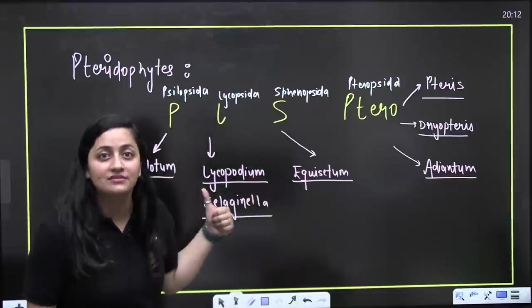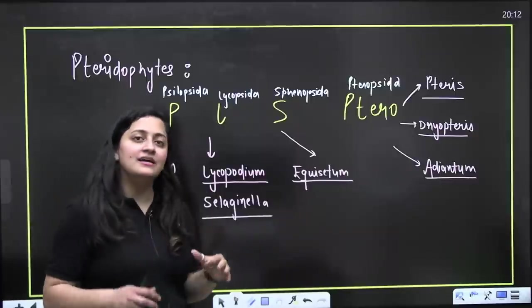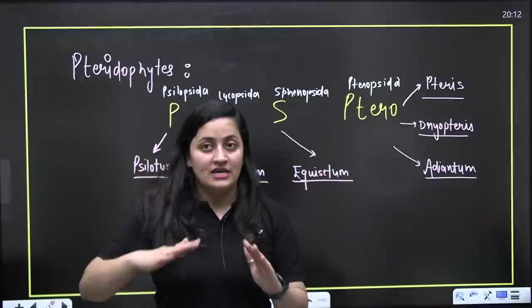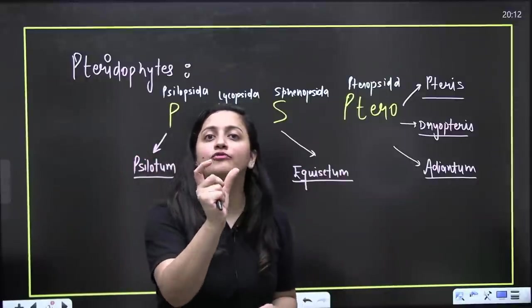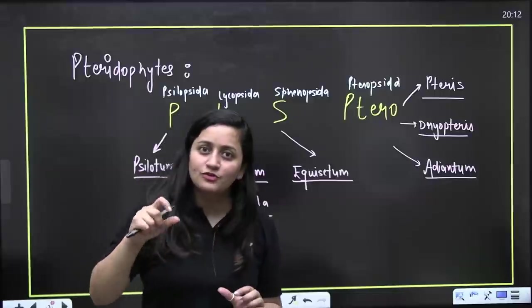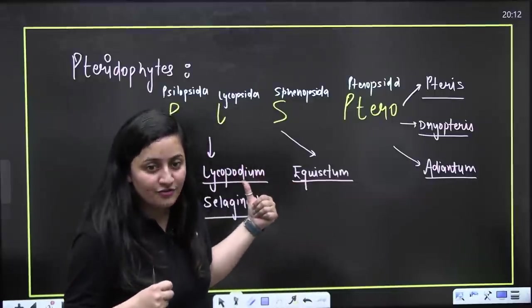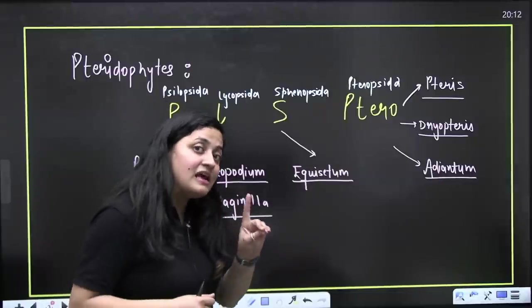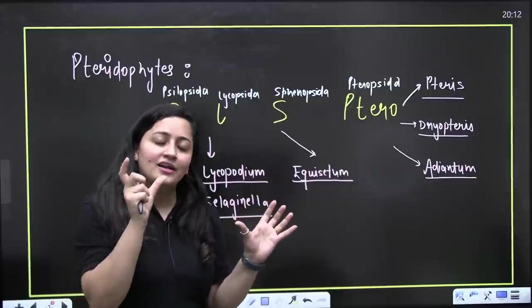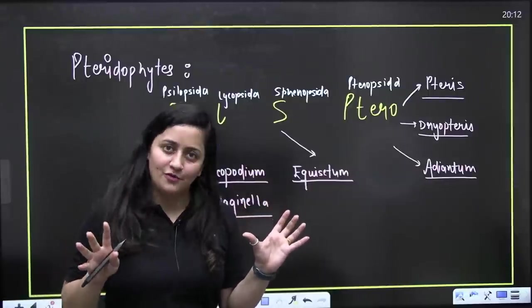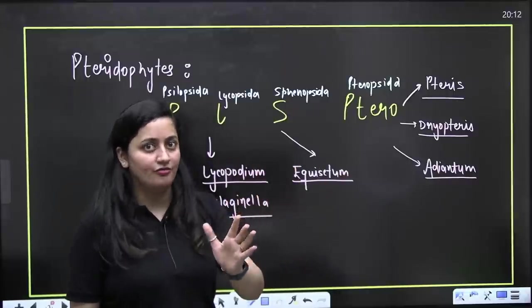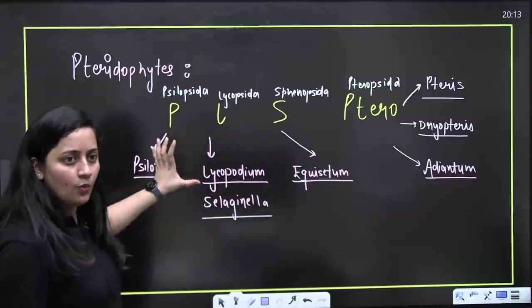Moving ahead to pteridophytes — the first terrestrial plants, also called tracheophytes. They are the first successful land plants, having xylem and phloem. The life cycle is haplodiplontic, but the dominant phase is the sporophyte — the diploid phase. The sporophyte forms haploid spores, which germinate to form the gametophyte. Importantly, the gametophyte here is also independent and not dependent on the sporophyte. In some pteridophytes, heterospory was a precursor for the seed habit.